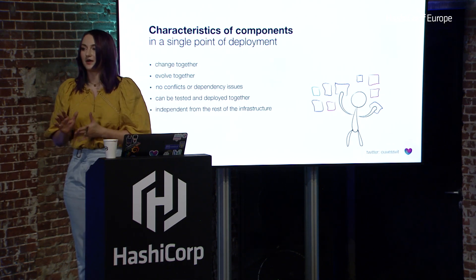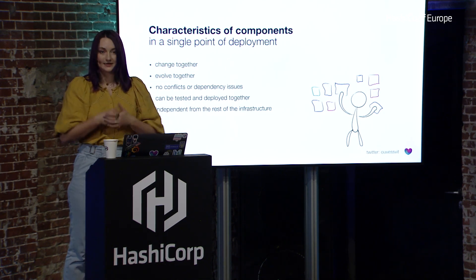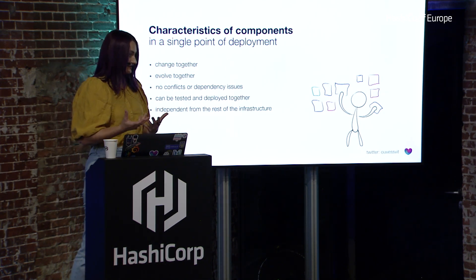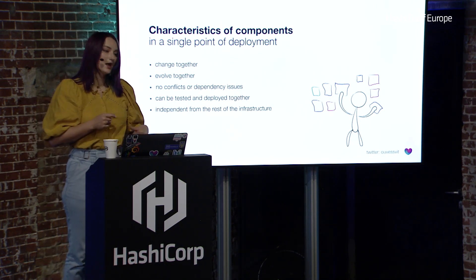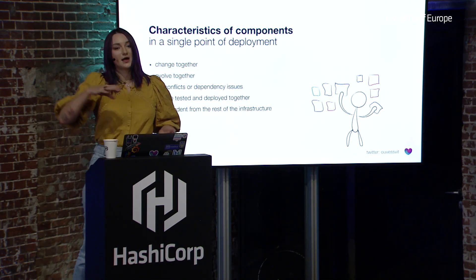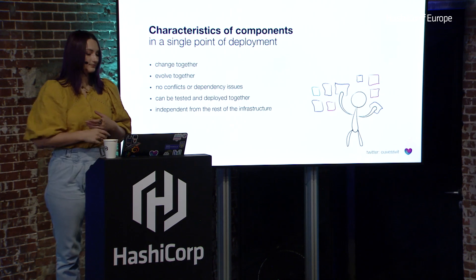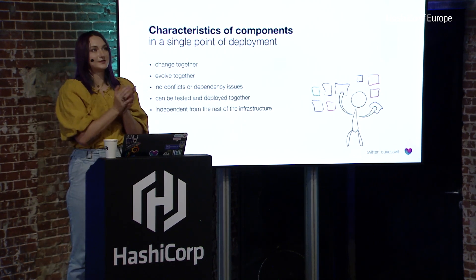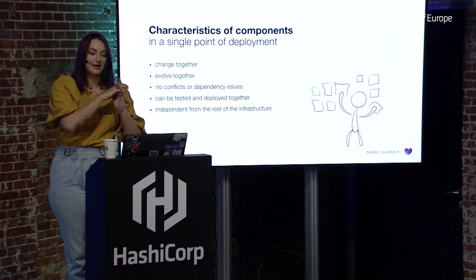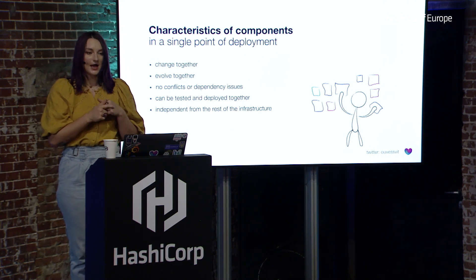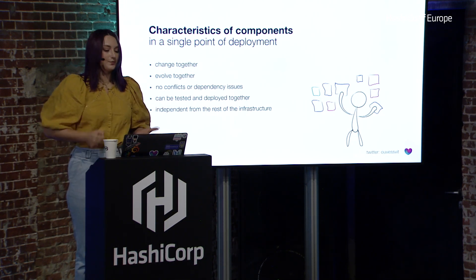In terms of how you identify these things: if you have a group of resources that lives together, evolves together, can be tested and deployed all together but independently from the rest of your infrastructure — that independence is variable. Your OpenSearch cluster will need a VPC, but you'll have probably deployed a VPC separately anyway. But other than that, your group of resources will be independent, with no conflicts and no dependency loops. And you can really have a lifecycle on its own for this group of resources. This would be your single point of deployment.